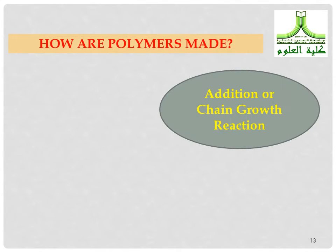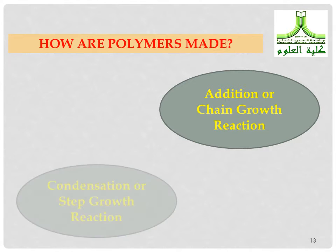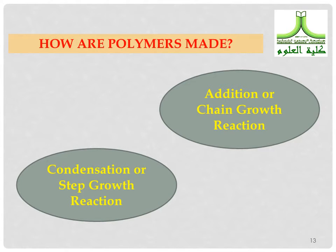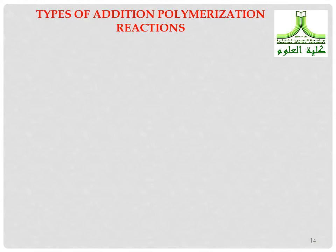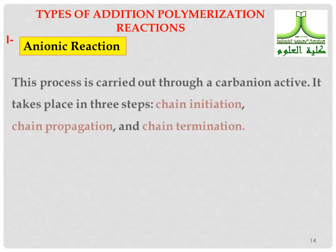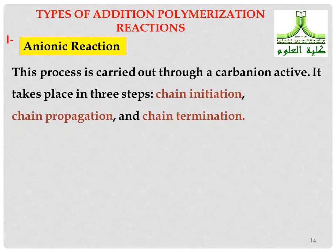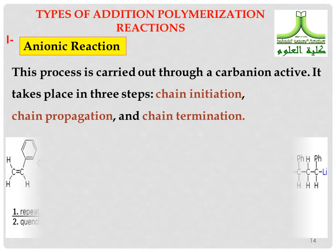How are polymers made? They are made from addition or chain-growth reactions, or by condensation or step-growth reactions. Types of addition polymerization include anionic reactions, which are carried out through a carbanion active species and take place in three steps: chain initiation, chain propagation, and chain termination.